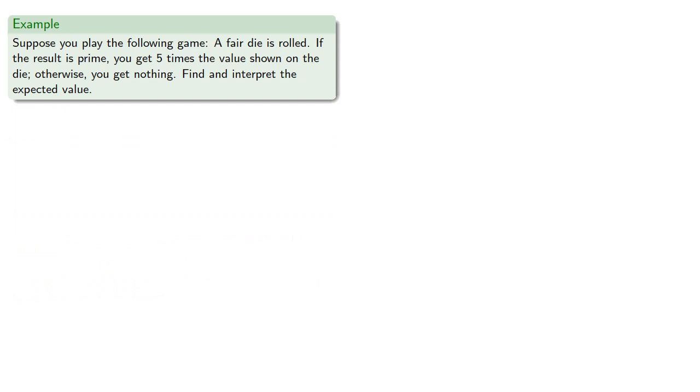So for example, suppose you play the following game. A fair die is rolled. If the result is prime, you get five times the value shown on the die. Otherwise you get nothing. Find and interpret the expected value.